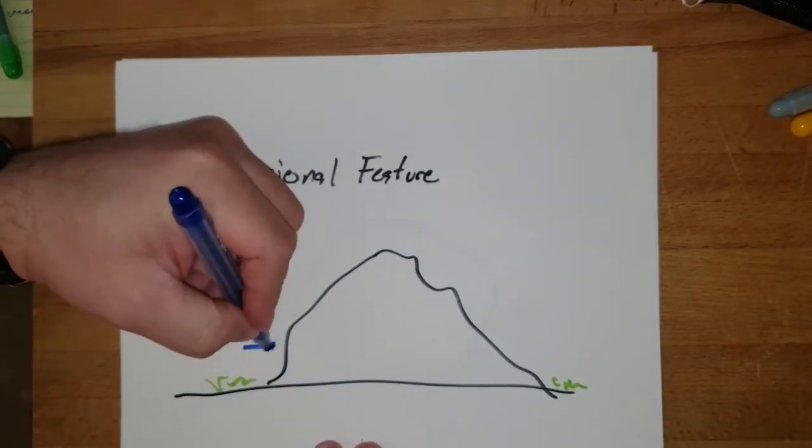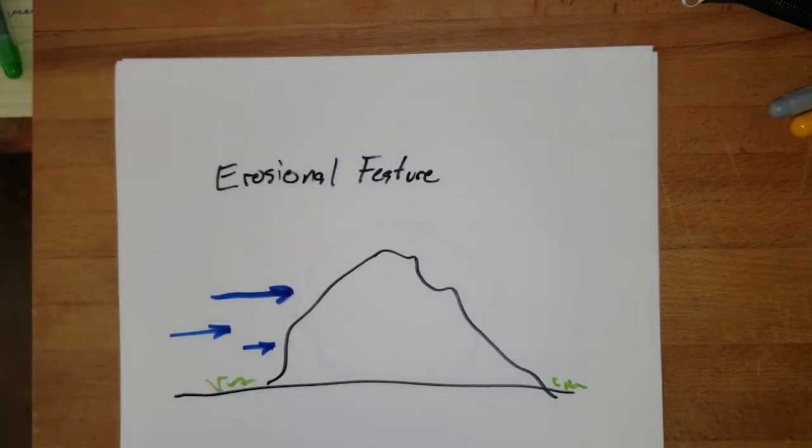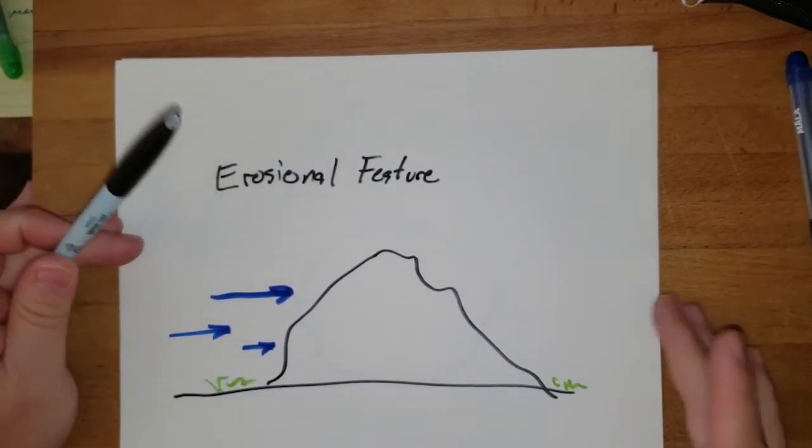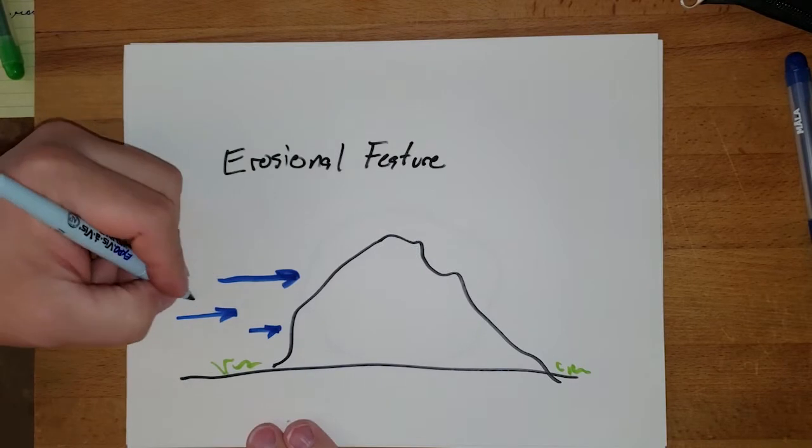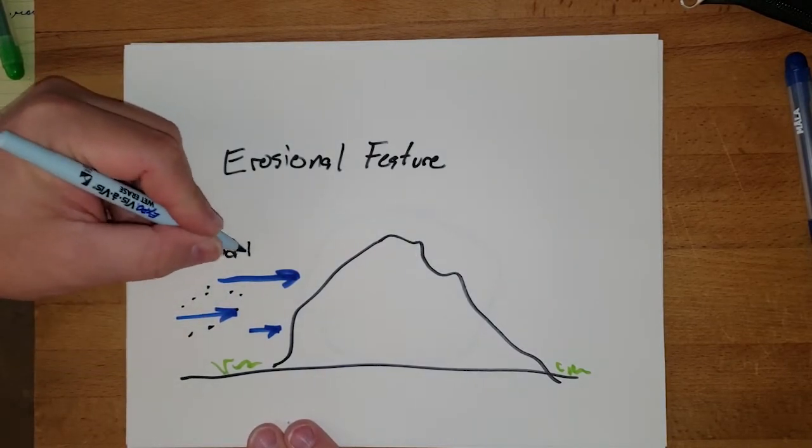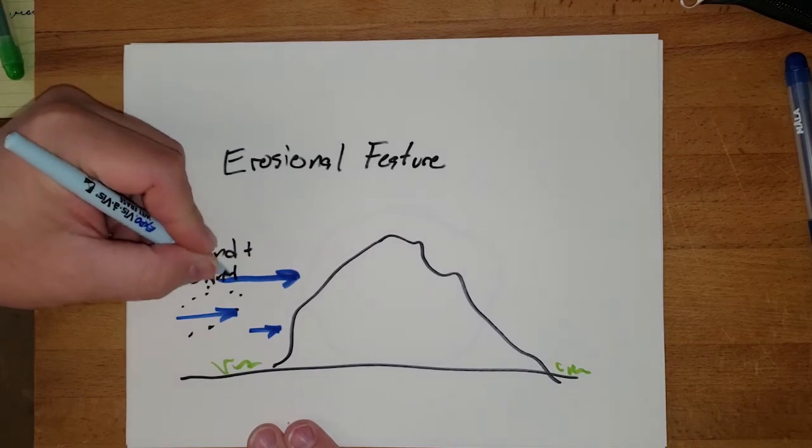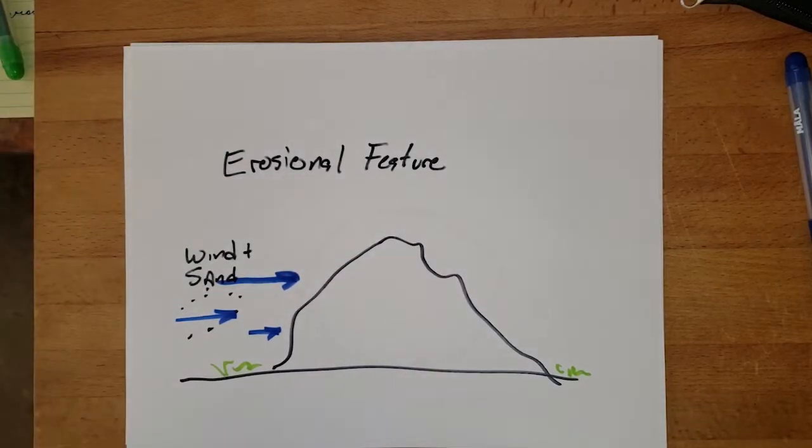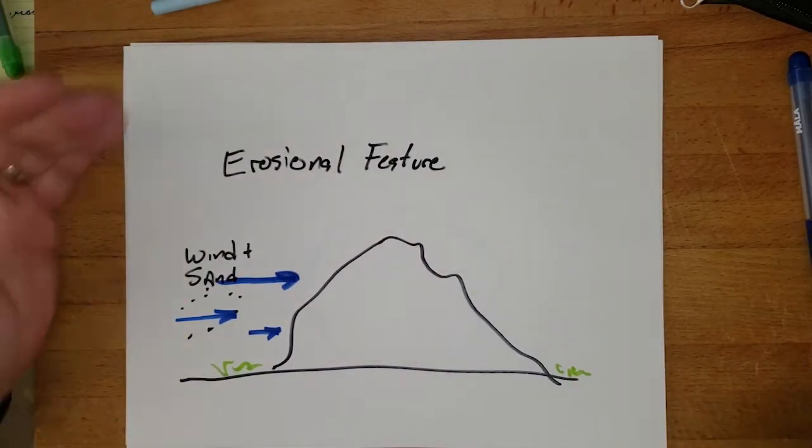Now what happens out there with the wind? Well the wind is going to be blowing along, and as it blows it doesn't blow along just with the wind—sometimes it's going to have small particles of sand. So we have wind and sand blowing along and plowing into this rock.